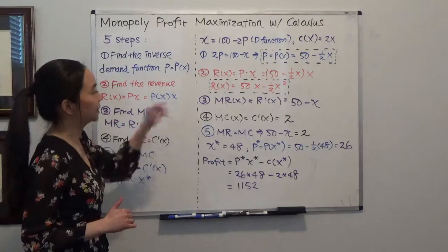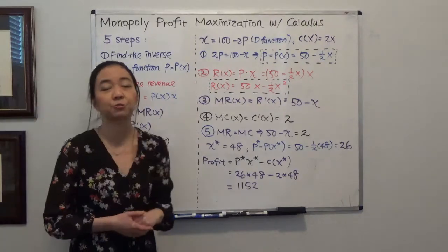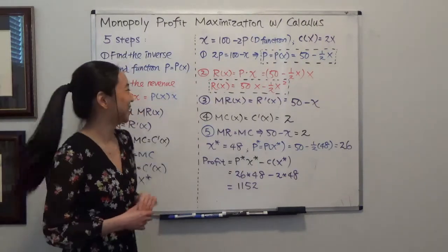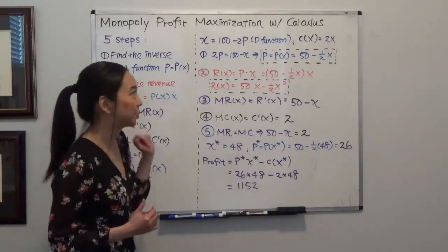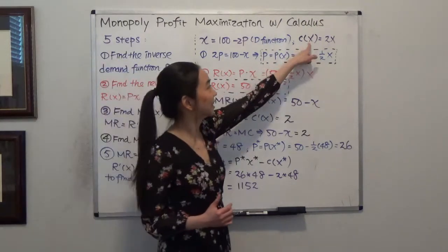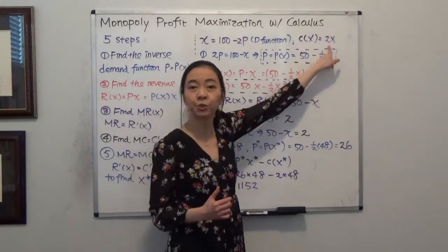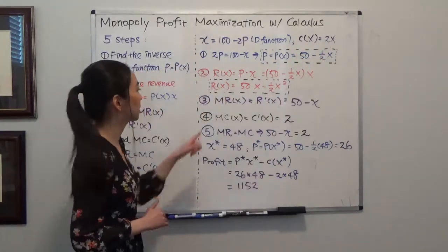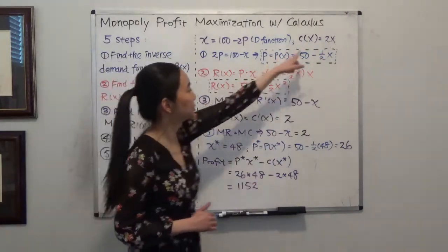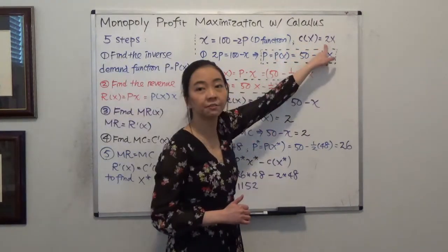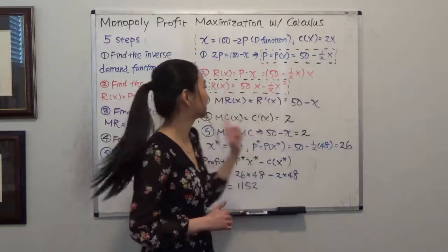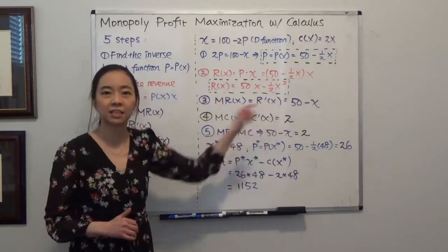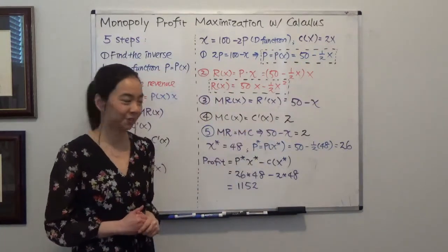The fourth step is to find my marginal cost function. I know my total cost is equal to 2x, so my marginal cost is just the derivative of 2x, which gives 2. So that's my marginal cost.